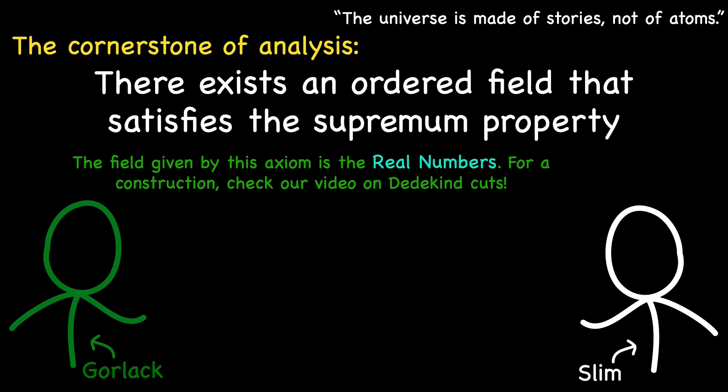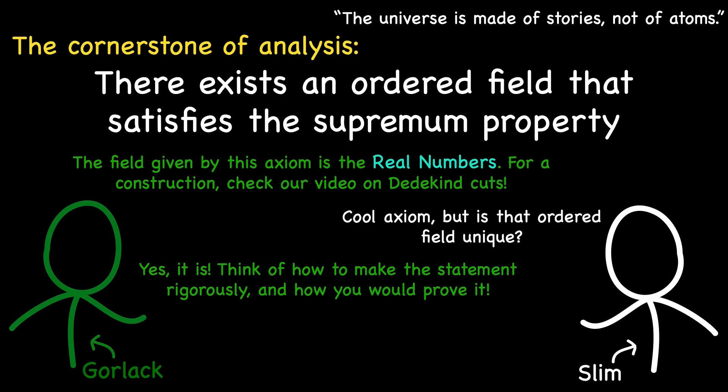But can we assert that there is only one structure satisfying this axiom? With numerous fields and ordered fields in existence, the question arises. Could there be multiple ordered fields meeting the supremum property? The intriguing answer is that any two number systems adhering to these axioms are essentially indistinguishable as ordered fields.